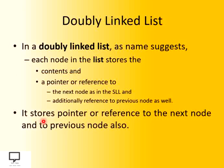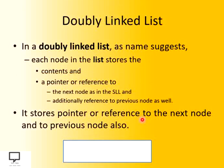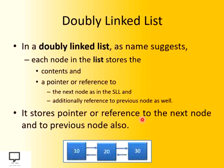In short, a doubly linked list and its nodes store a pointer or a reference to the next node as well as to the previous node, just as shown in this diagram.